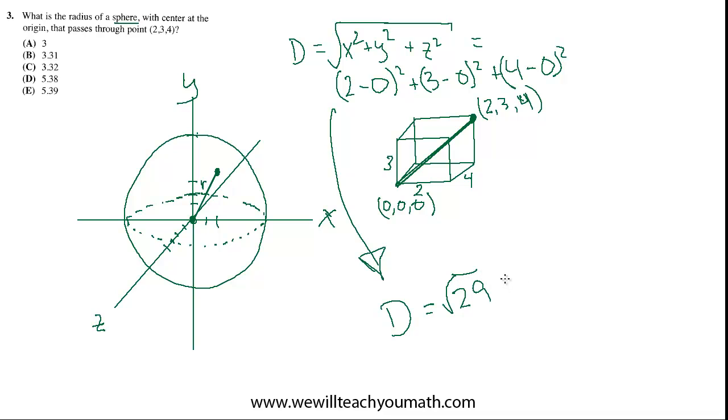And when you put that in your calculator, just be careful with the rounding because I get 5.385 something, and it ends up rounding up, but just by a tiny bit. So it's 5.39, barely. And E becomes the best choice.